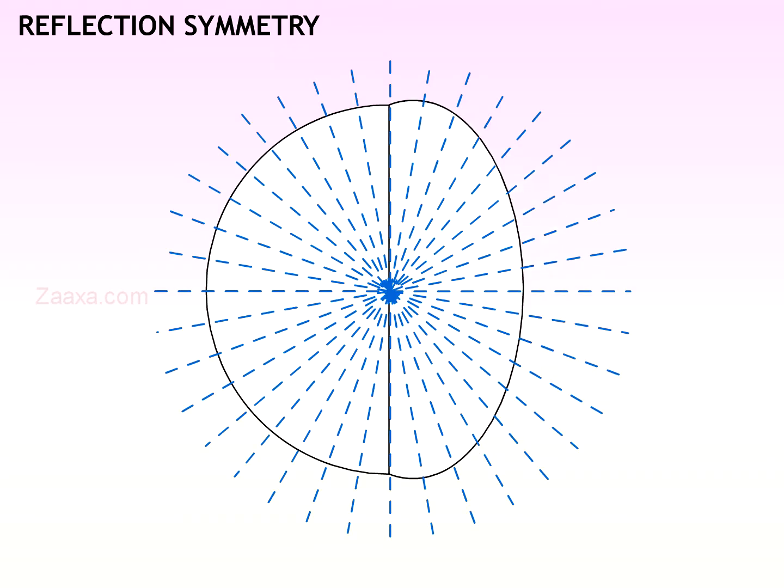A circle has an infinite number of axes of symmetry. In a circle, any line that passes through the center is an axis of symmetry.